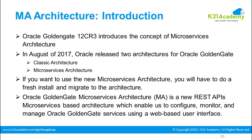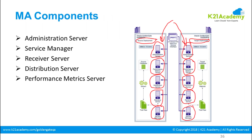Microservices architecture works by providing a GUI. You connect to Golden Gate using APIs, and you have a complete GUI-based model available wherein you can configure, monitor, and manage Oracle Golden Gate using a web-based user interface. There are five important components available in the microservices architecture.